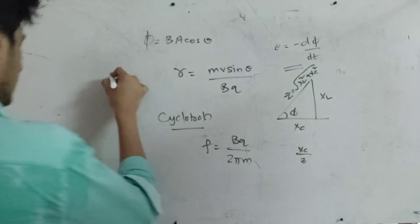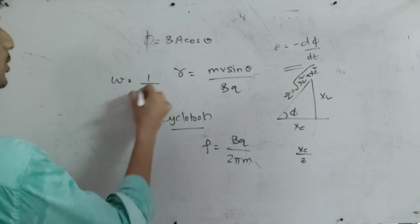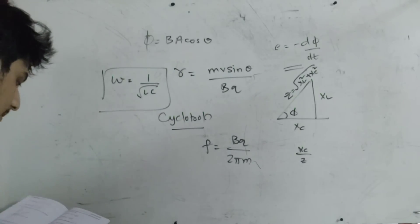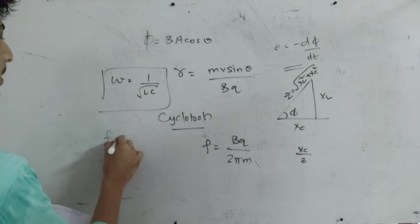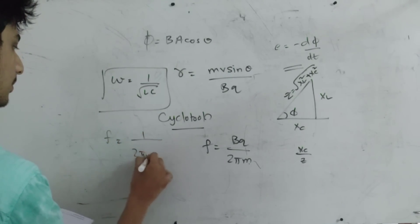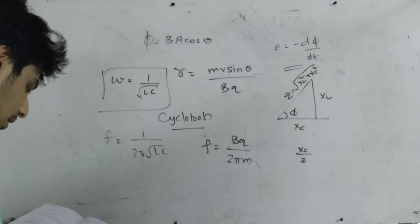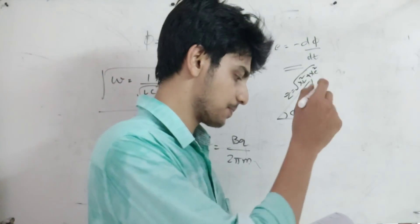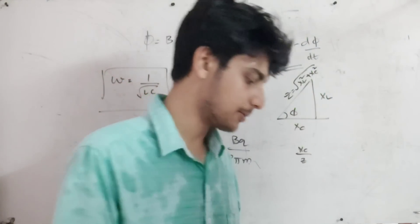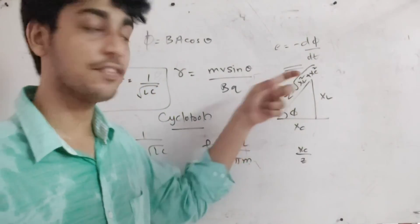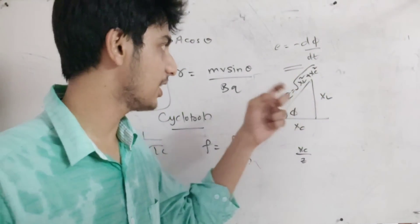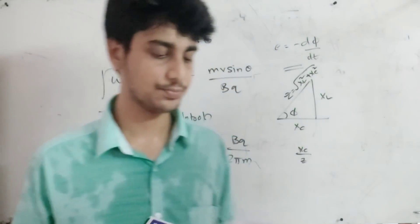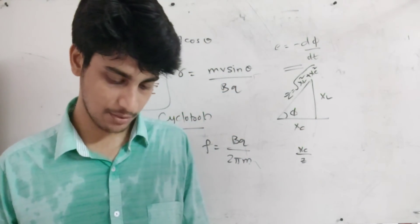Omega resonance condition: omega is equal to 1 by root LC. Frequency is equal to 1 by 2π root LC. That's important. Power factor is important — check it out.